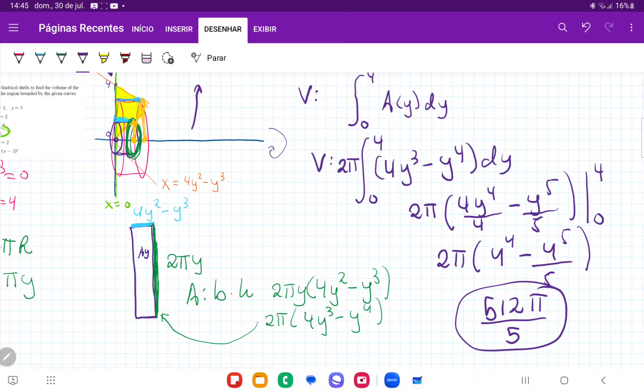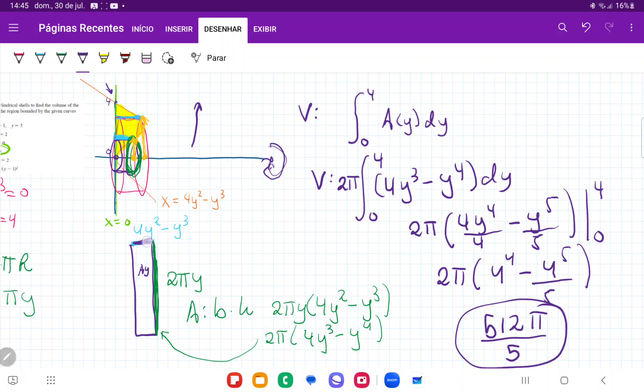When I sum up all these cylinders that wrap around the x axis, whose width is the length where it touches the orange curve and whose height is just 2 pi y because that's the circumference of the circle that wraps around it.